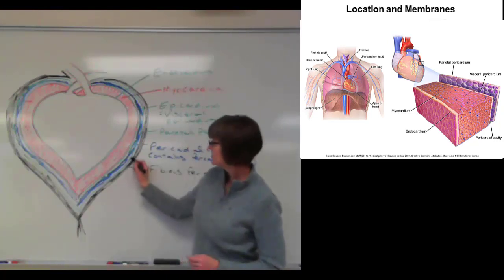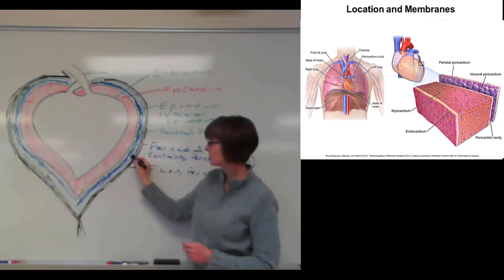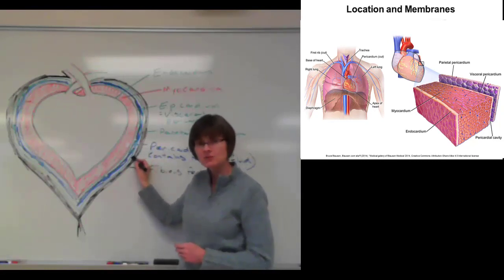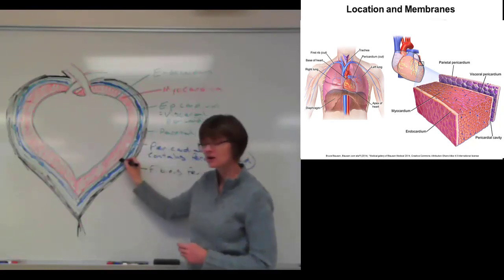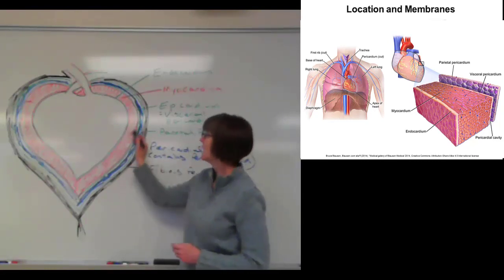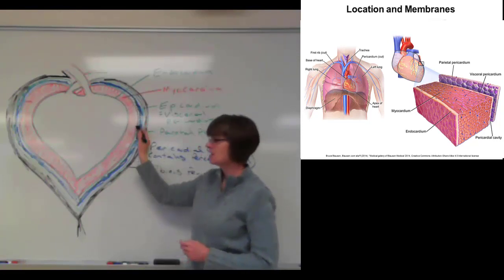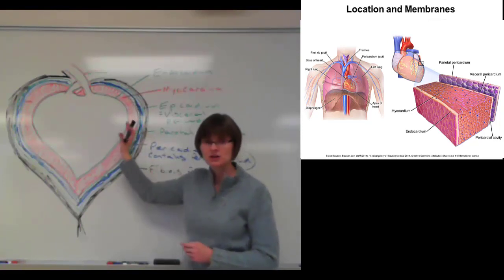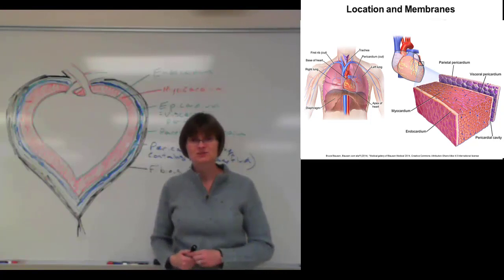The serous layer of the parietal pericardium is connected to the fibrous pericardium. Then we have the pericardial cavity, and then the visceral layer of the pericardium that's right on the heart's surface.